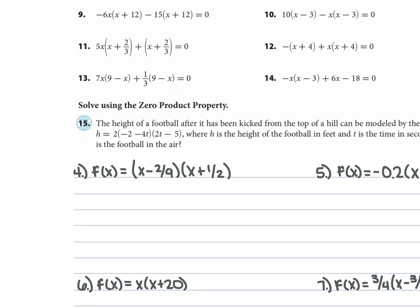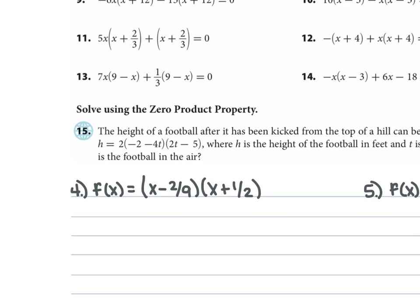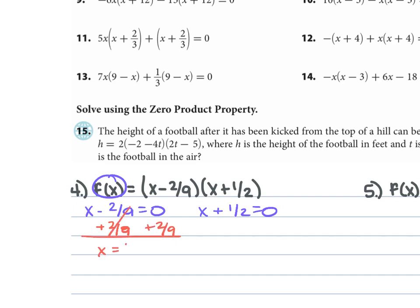For problem 4, we're given f(x) = (x − 2/9)(x + 1/2), which is saying 0 = (x − 2/9)(x + 1/2). So x − 2/9 = 0 and x + 1/2 = 0. Adding 2/9 to each side gives x = 2/9, and subtracting 1/2 from each side gives x = −1/2.